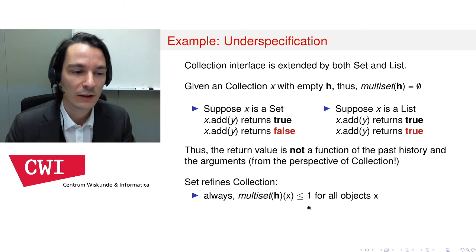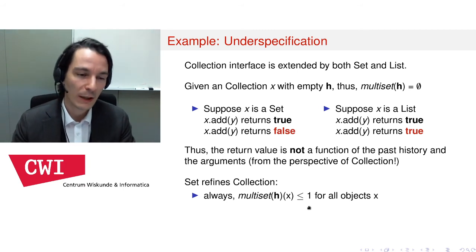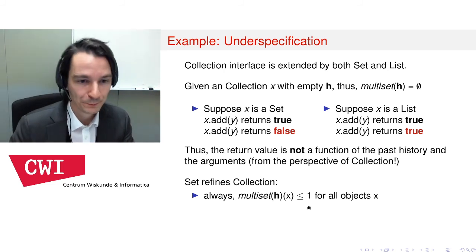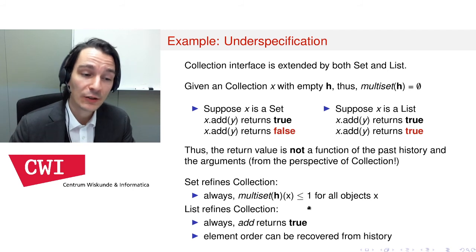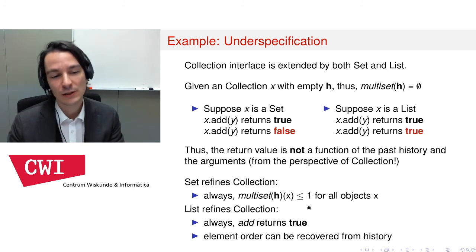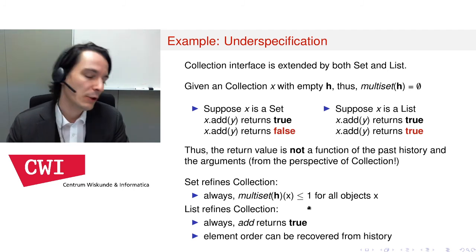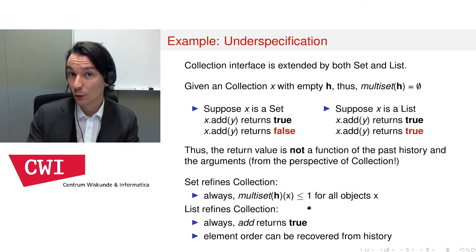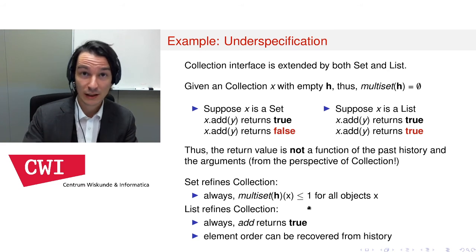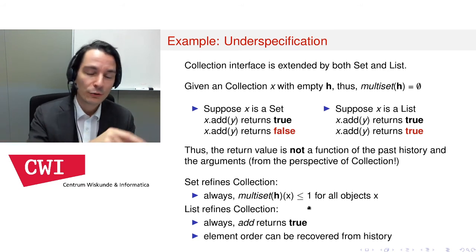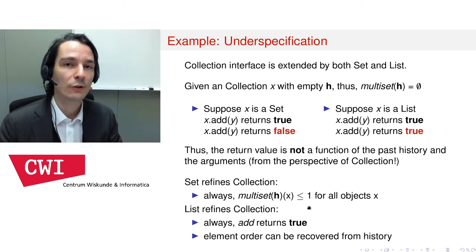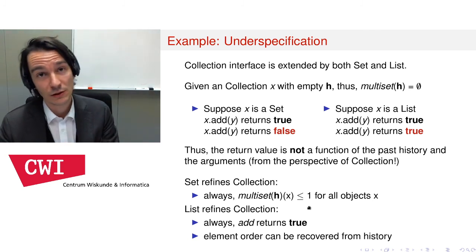Set refines the collection by ensuring that the multiplicity of every object is always bounded — never higher than one. List is another refinement: whenever you want to add an element, it always returns true. You might ask where the list gets additional information, such as the ordering of elements. Because the history records all events, in the list you can recover the order in which elements were added to ensure they remain in order, while for sets this ordering is not important.